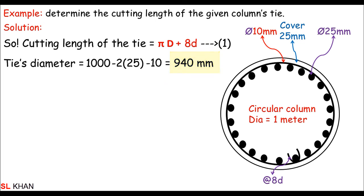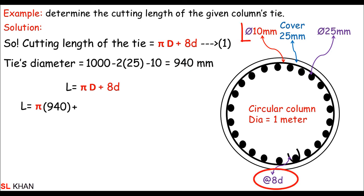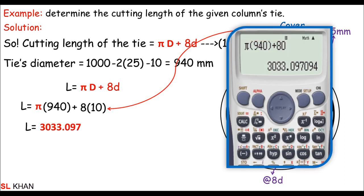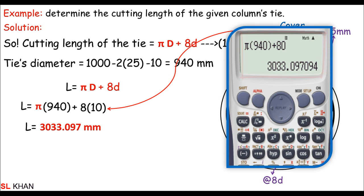Now we substitute into the formula L = πD + 8d. So L = π × 940mm + 8 × 10mm. Using a calculator, we get L = 3033.09mm.